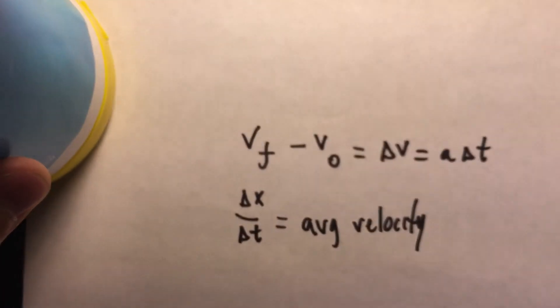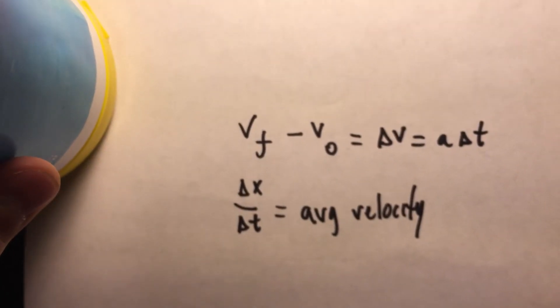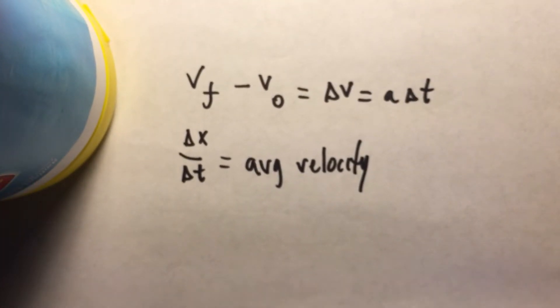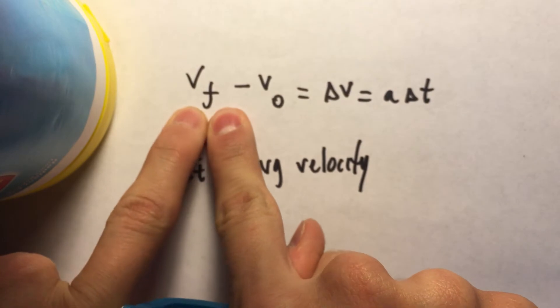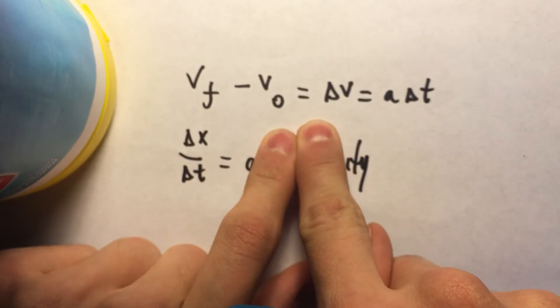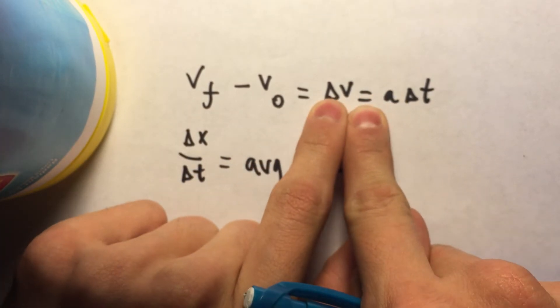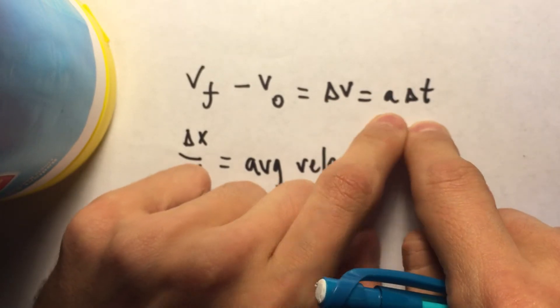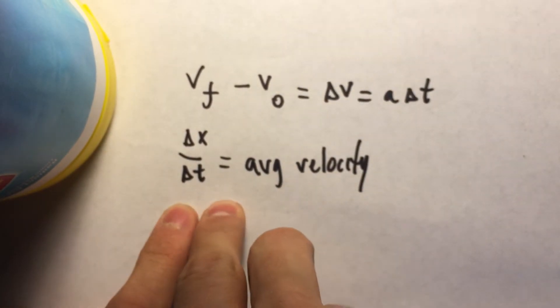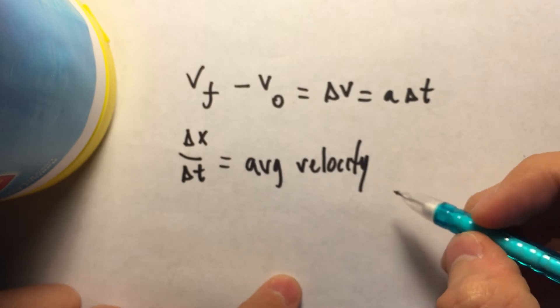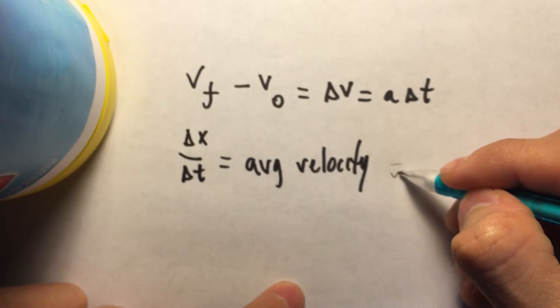In order to find that, we have to remember two concepts that we learned from physics. First concept is what we just derived, which is final velocity minus initial velocity equals the change in velocity, which ultimately equals acceleration times time. Second concept we've got to know is change in x divided by change in t equals average velocity, which usually is denoted like that.